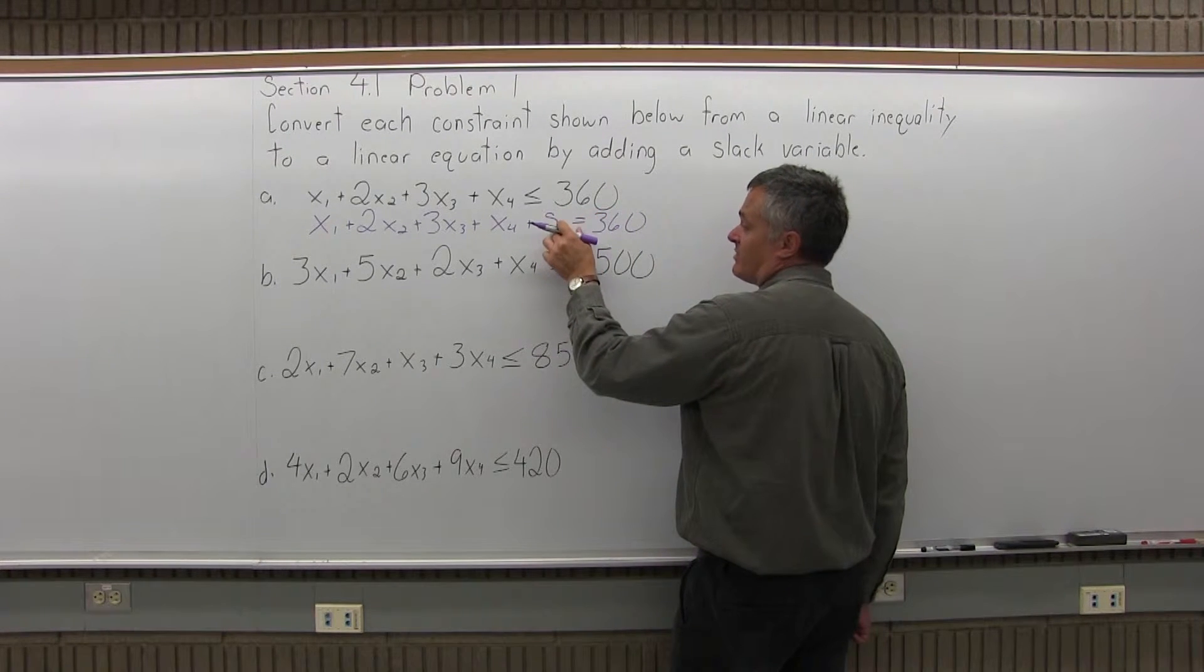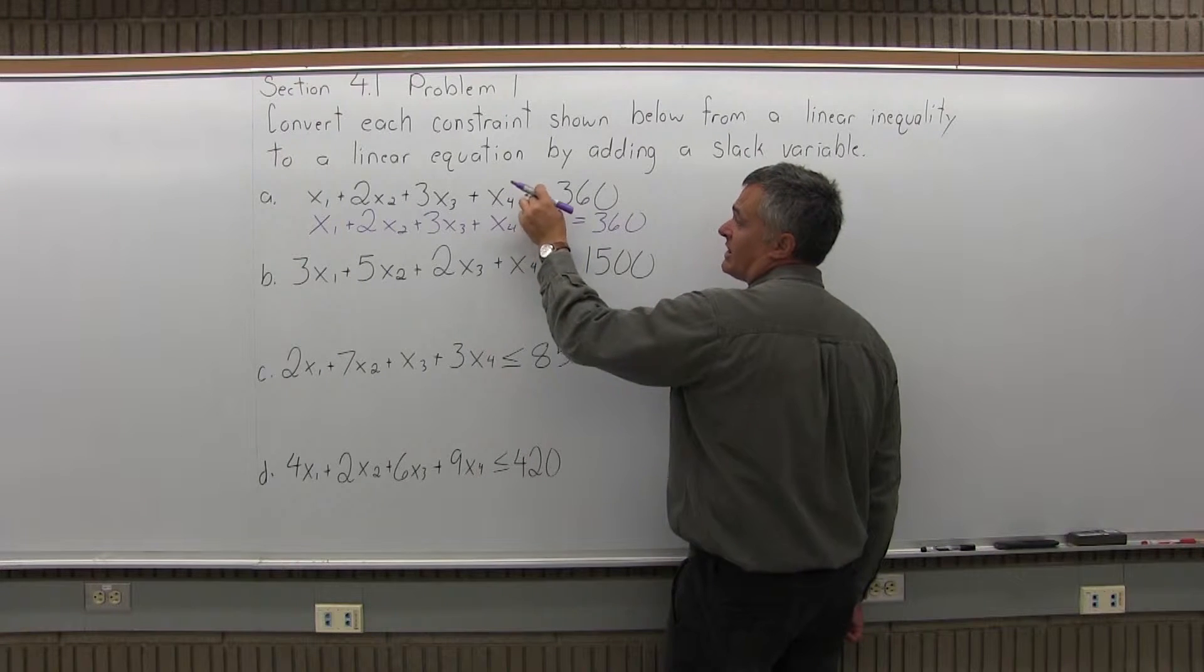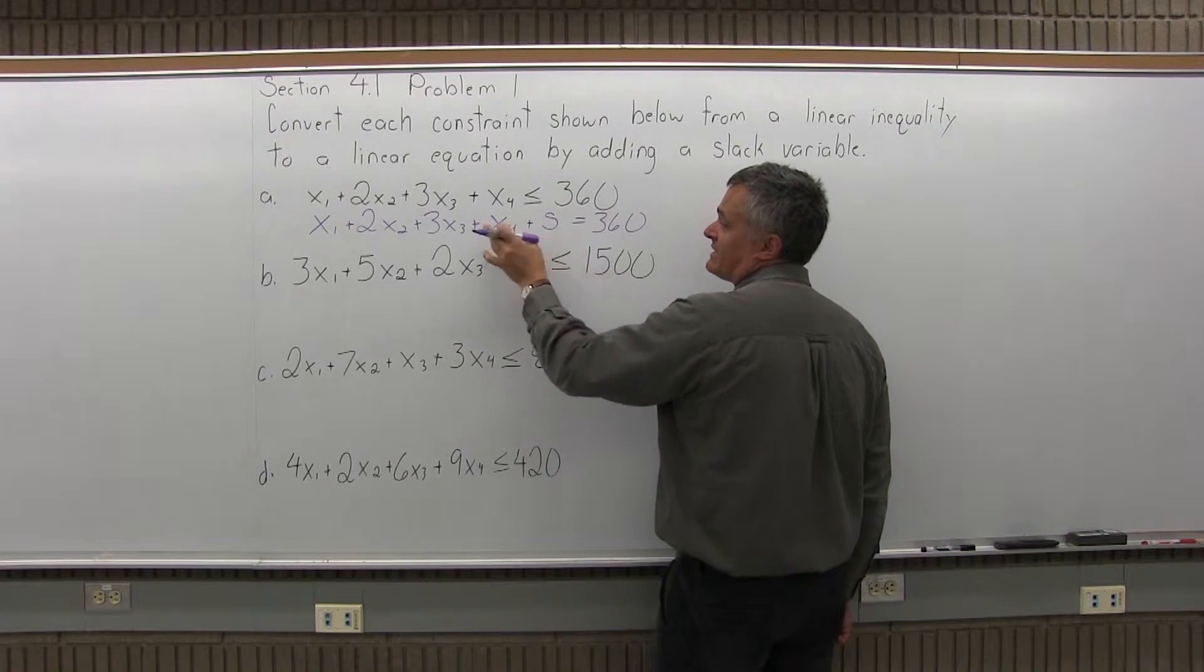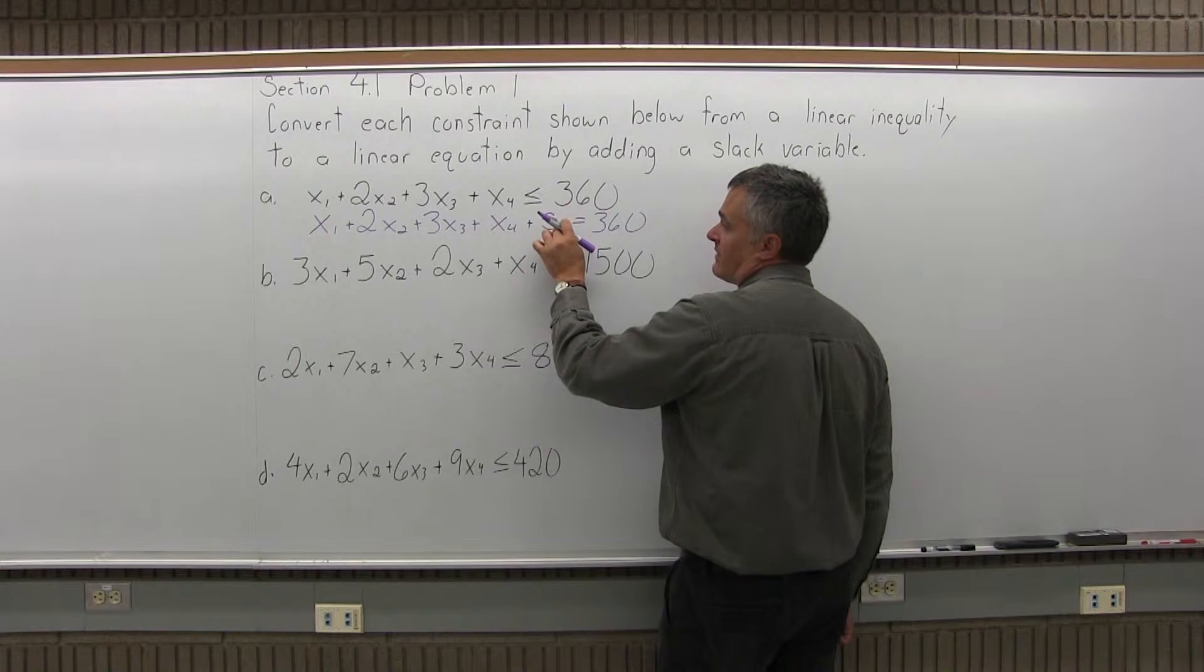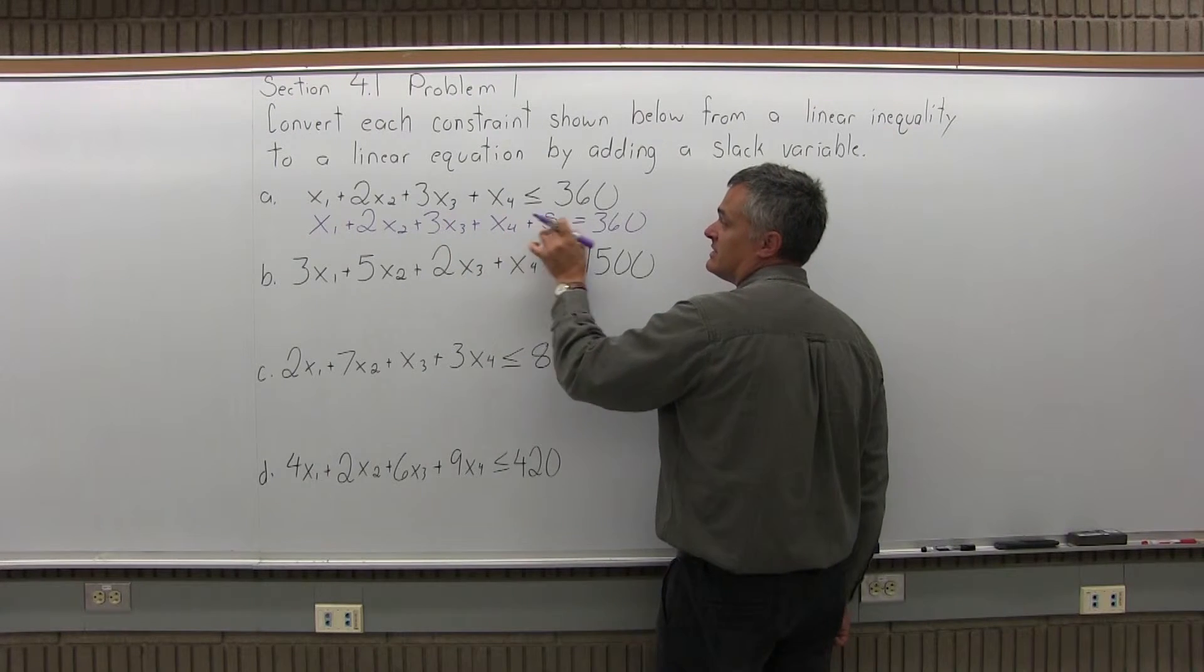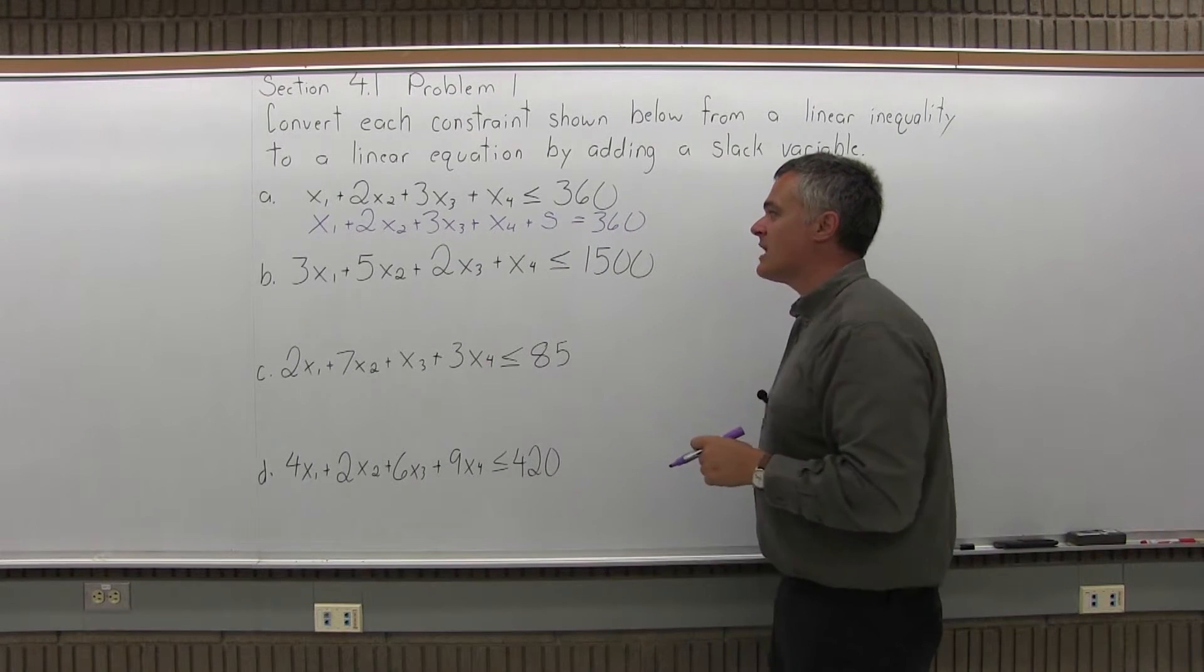The s for slack takes up the slack of how much less than 360 the equation is. So if it adds up to 350, you need a slack of 5. If it adds up to 358, you need a slack of 2. If it adds up to 360, you need a slack of 0. It takes up the slack.